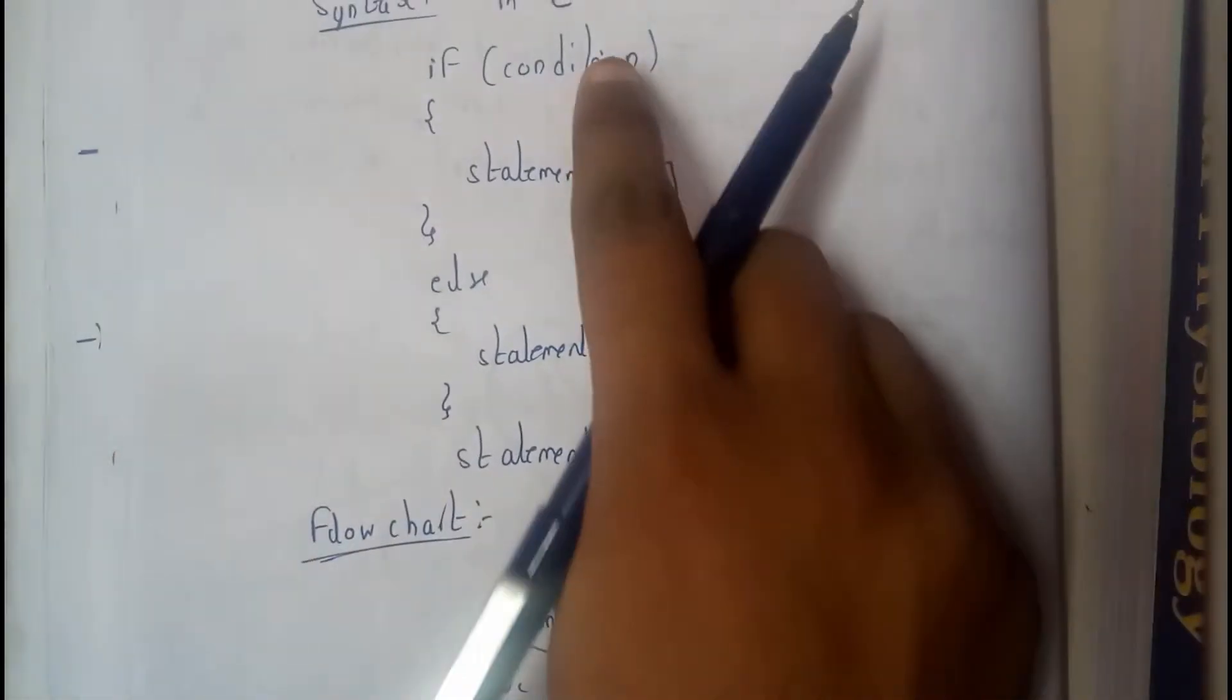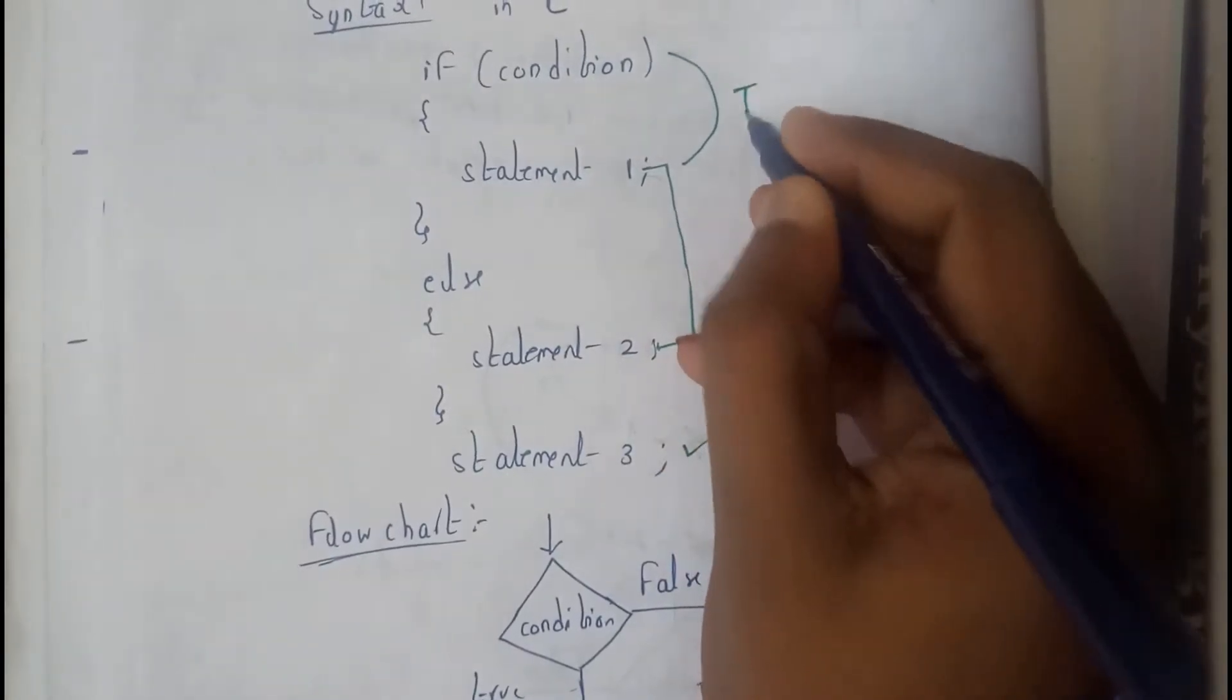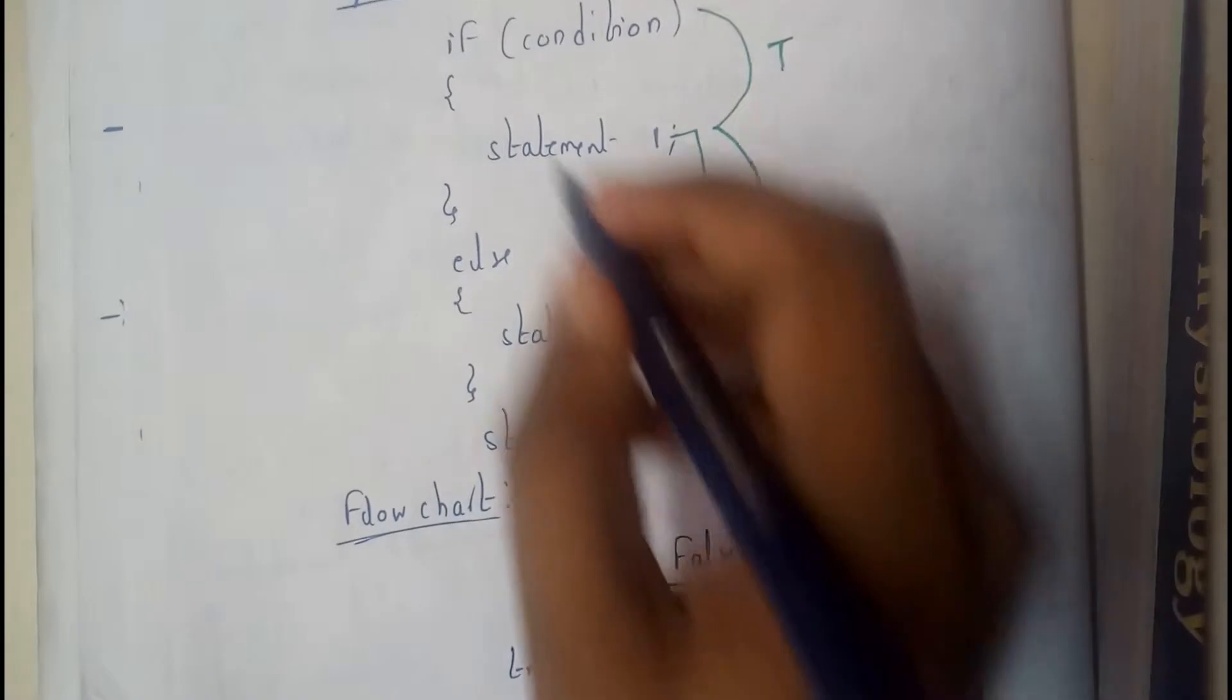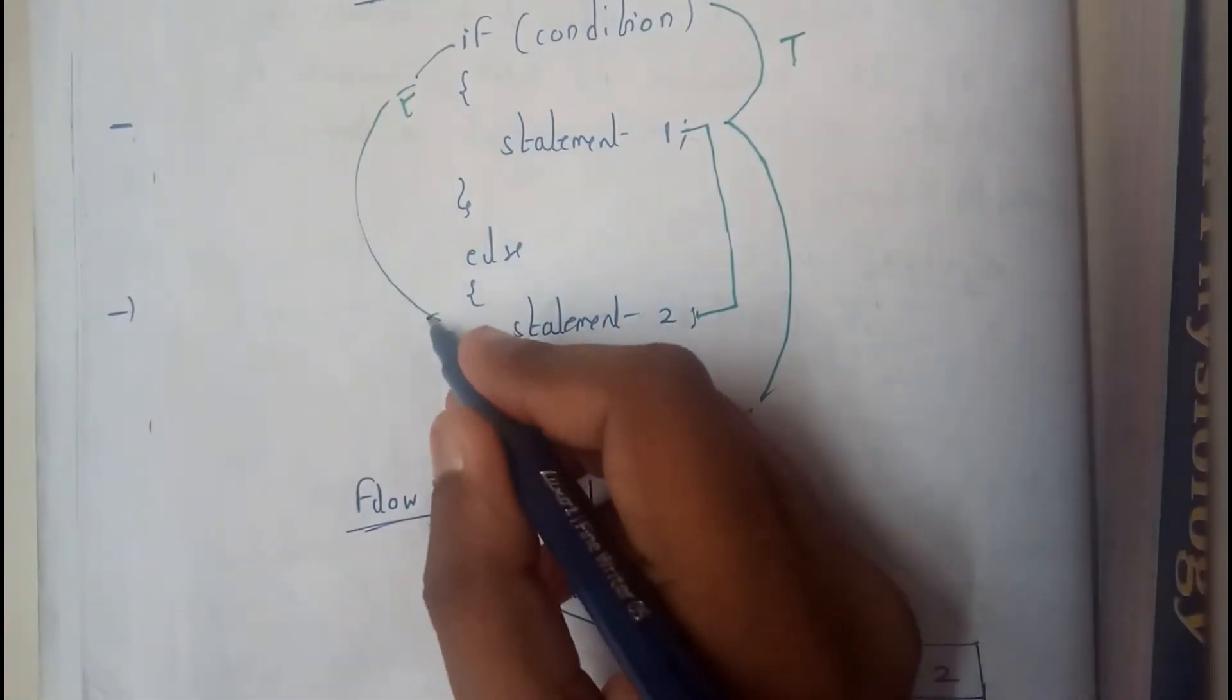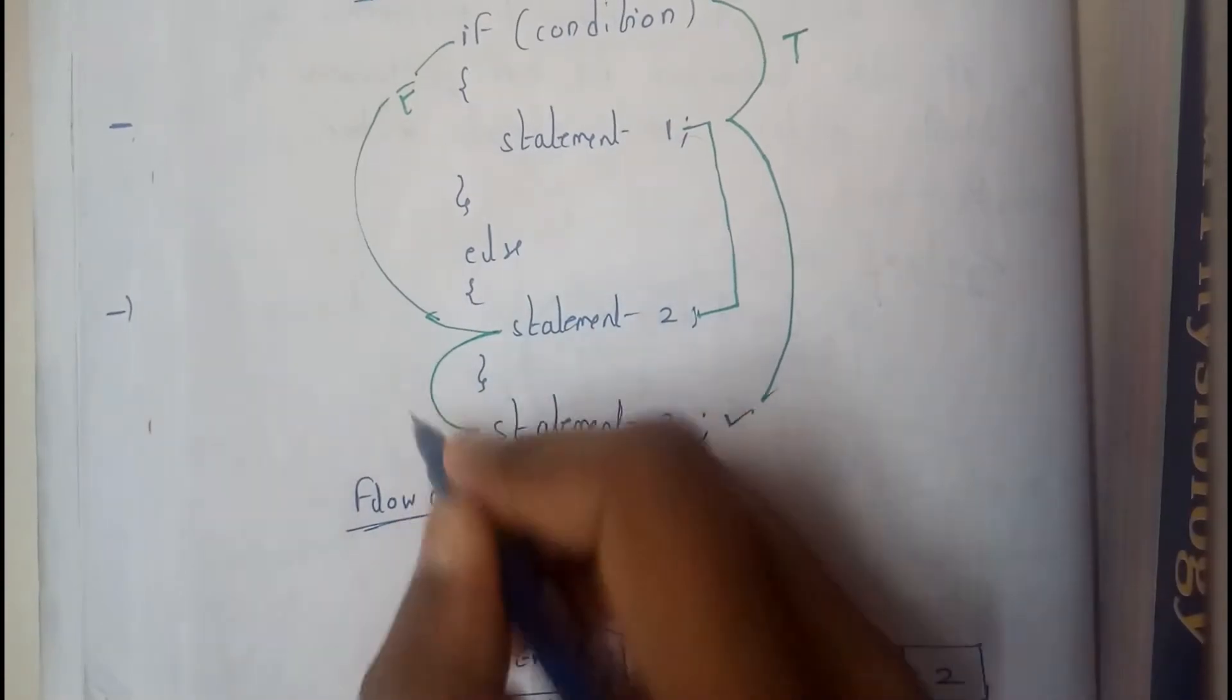Because if the condition is true, let us assume if condition is true, it executes this and directly jumps outside. If this condition is false, it directly enters into this statement, and this statement will be executed.